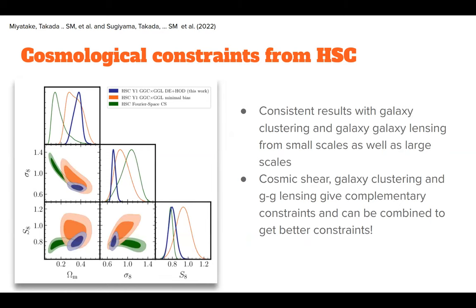We've done this analysis in different ways. Using the Fourier cosmic shear power spectrum from the dark matter map gives the green contour. The analysis with galaxy clustering plus galaxy-galaxy lensing gives the purple contour. A perturbation theory-based analysis using only large scales gives the orange contour. Each gives slightly different constraints on the parameter space. If we can combine all three together — cosmic shear, galaxy clustering, and galaxy-galaxy lensing — that would be amazing, and that's what we're planning to do with the three-year data.